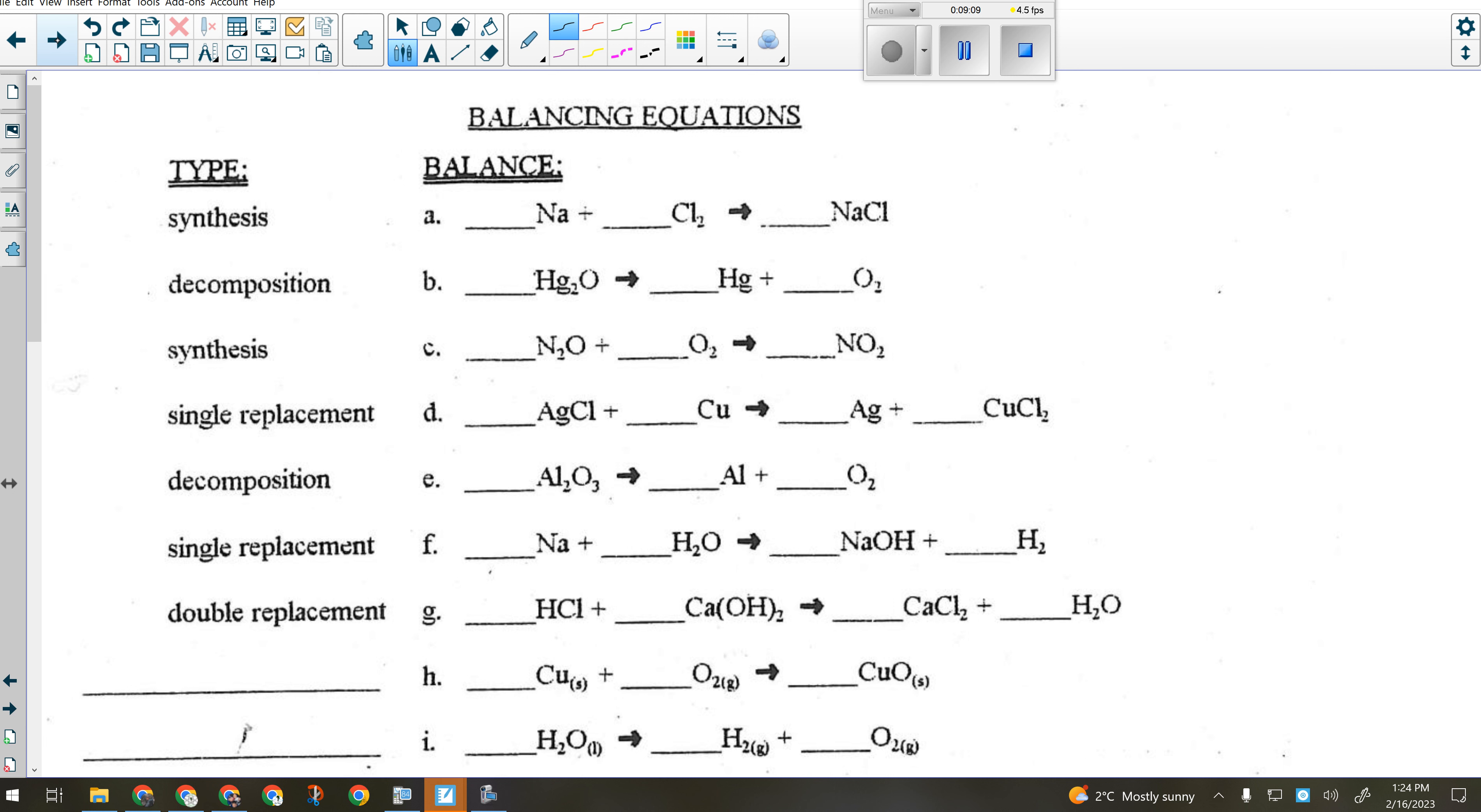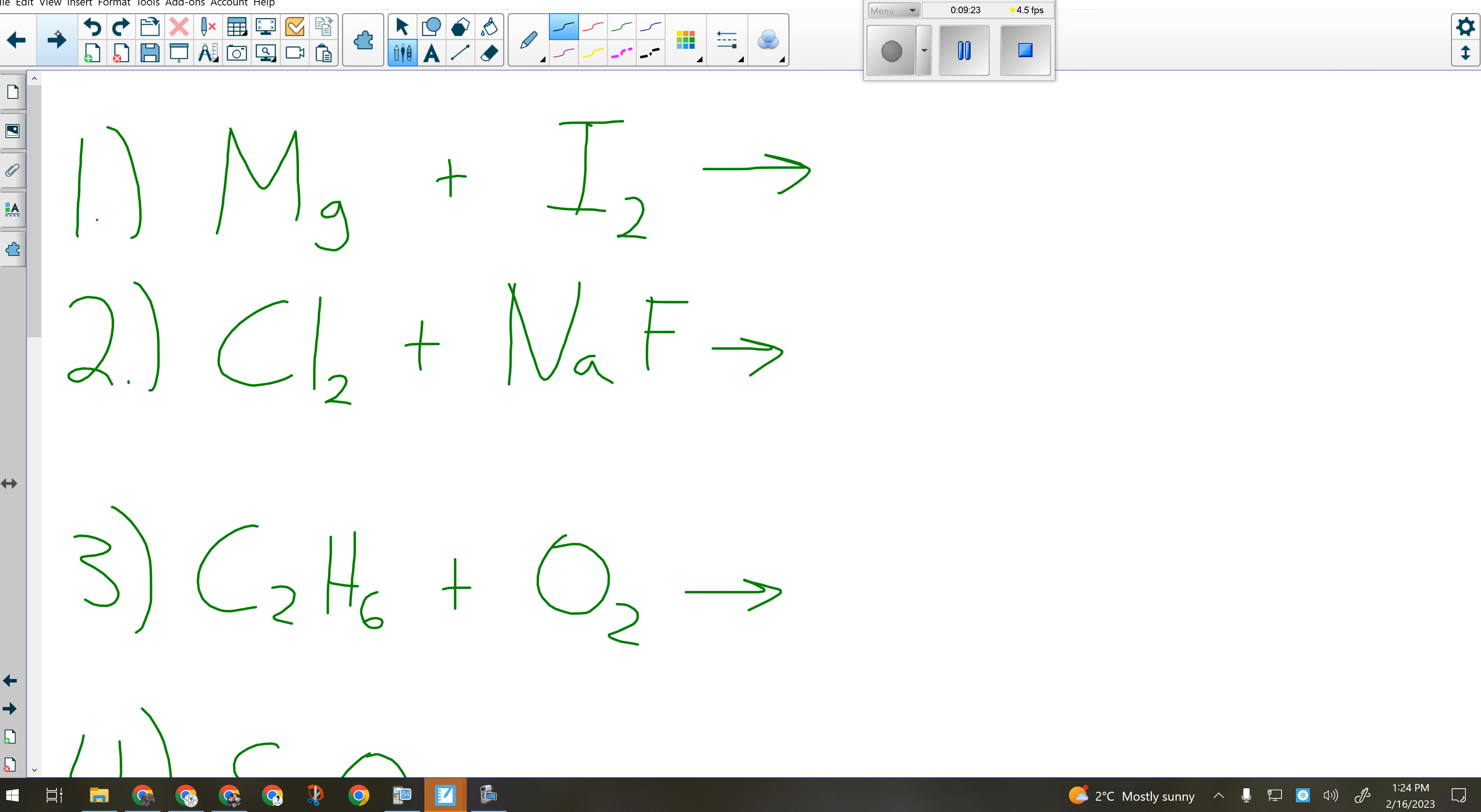All it has is you identify the type and you balance, but that's it. You don't actually have to write it out. So I mean, you can do that one if you want some practice with your balancing, but the next thing we're moving on to, guys, is this: predicting the products of the chemical reaction.